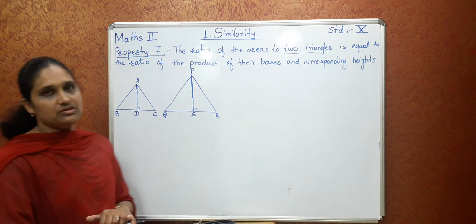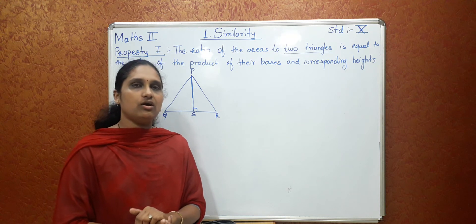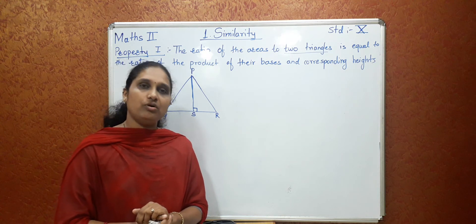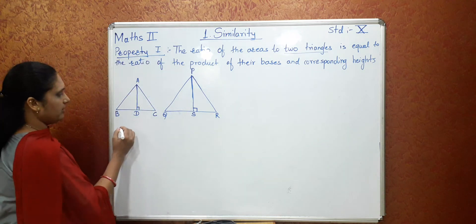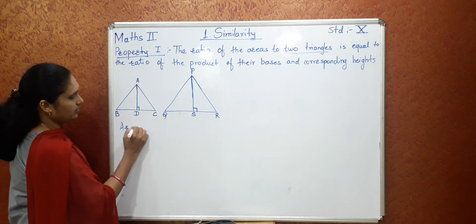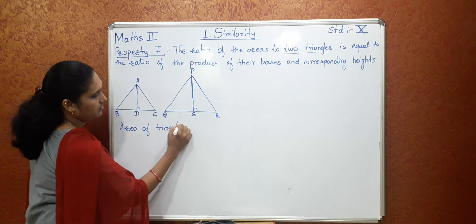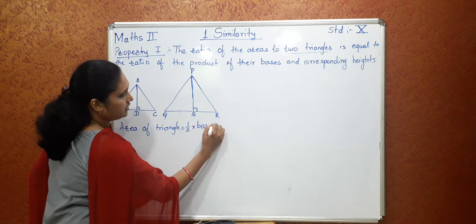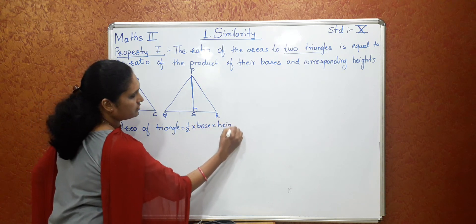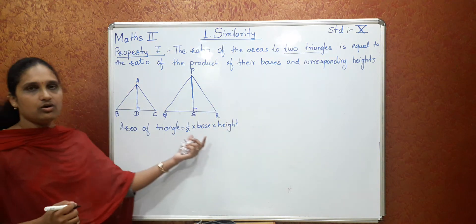Now students you have studied in previous classes about area of triangle. So what is the formula of area of triangle? Area of triangle is equal to half into base into height. This is the formula for area of triangle.